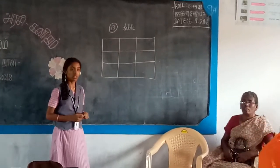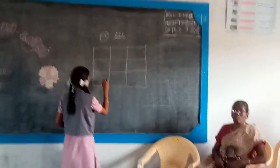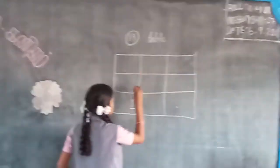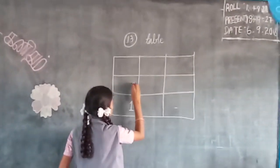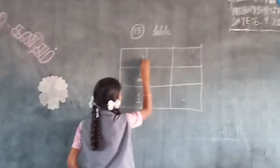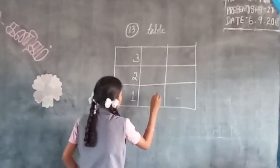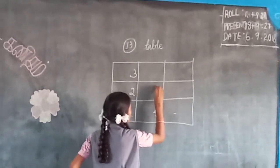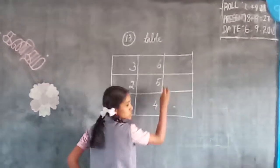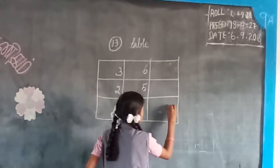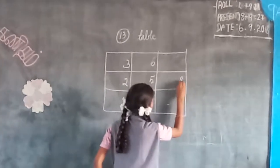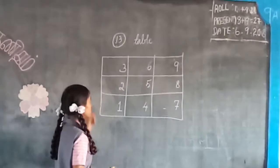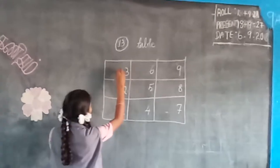We are going to start with the chair. 1, 2, 3, 4, 5, 6, 7, 8,